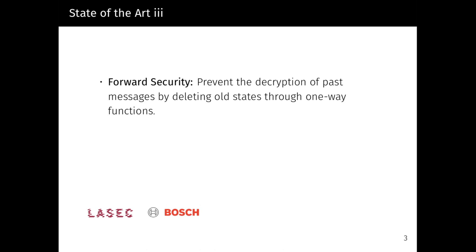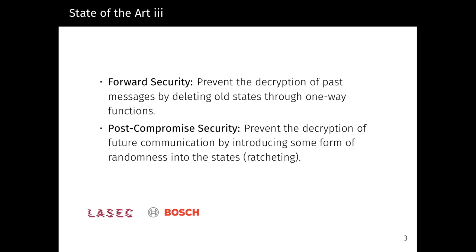We capture the security of a messaging protocol through two notions. The first one is forward security: we want to prevent the decryption of past messages by deleting old states through one-way functions. And secondly, post-compromised security: we want to prevent the decryption of future communication by introducing some form of randomness into the user states. This is commonly called ratcheting.